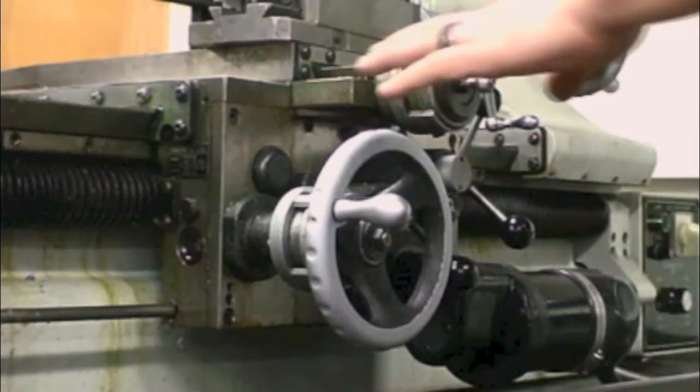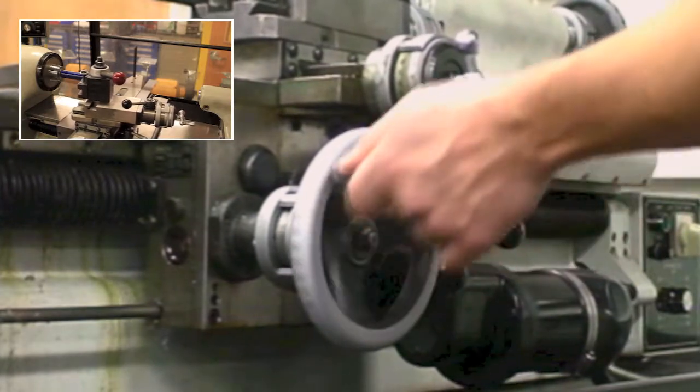Moving your tool is done by turning these two wheels. The lower wheel moves left and right, while the upper one moves in and out.